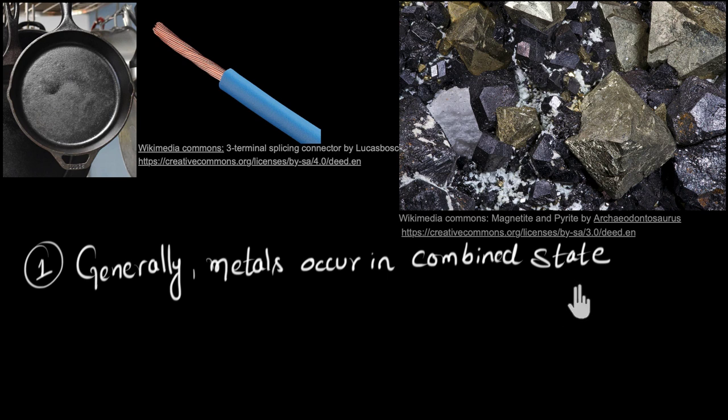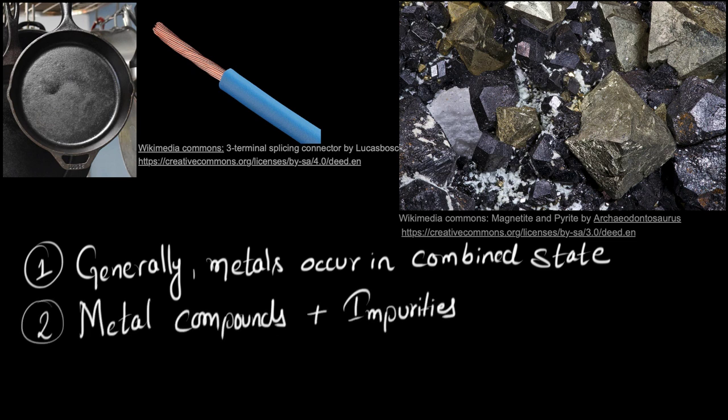Now the second thing is that in these rocks, you would not only find the metal compound that you're looking for, but along with this, there will be many other impurities. For example, this might have iron oxide, which I need, plus it might have some sand or some mud and soil or some other metal compounds that I want to get rid of. So the second problem is that these rocks will have metal compounds that I need, plus some impurities that I want to get rid of.